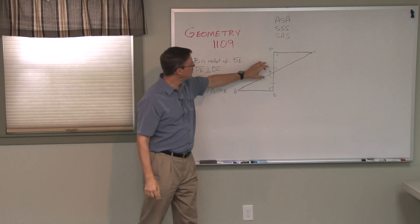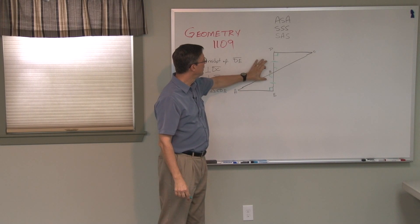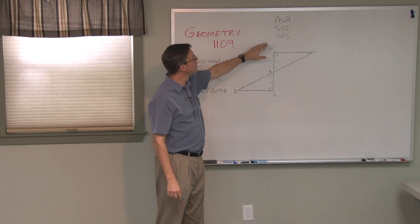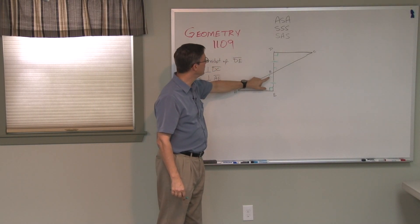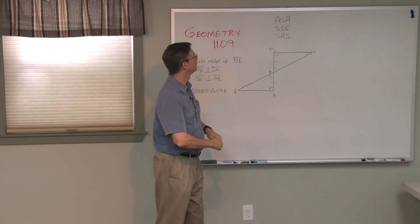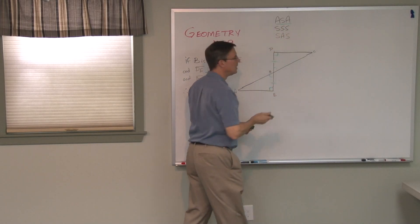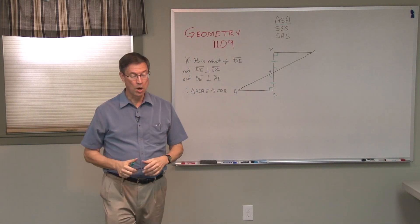Now I have two angles congruent, two more angles congruent, and these two sides congruent. You can see it's going to be angle-side-angle congruent to the angle-side-angle of the other triangle. So ASA would be the code for that one.